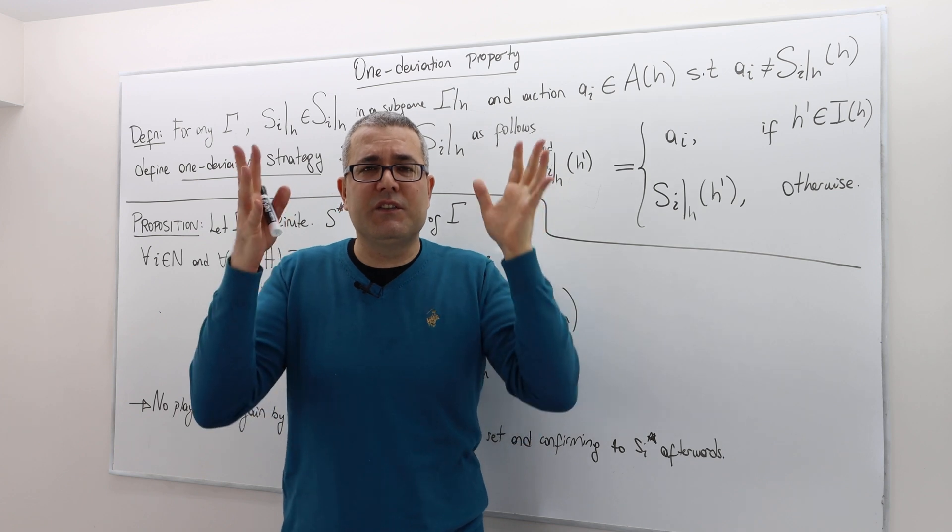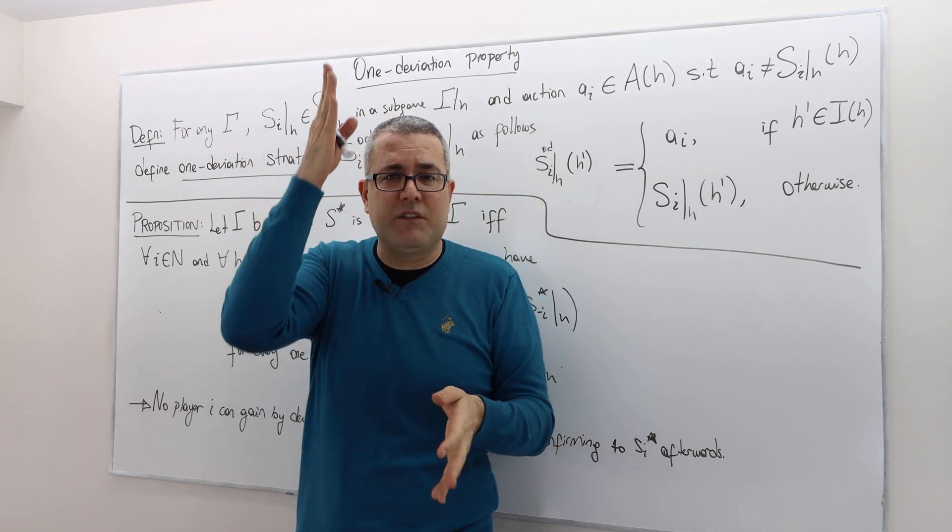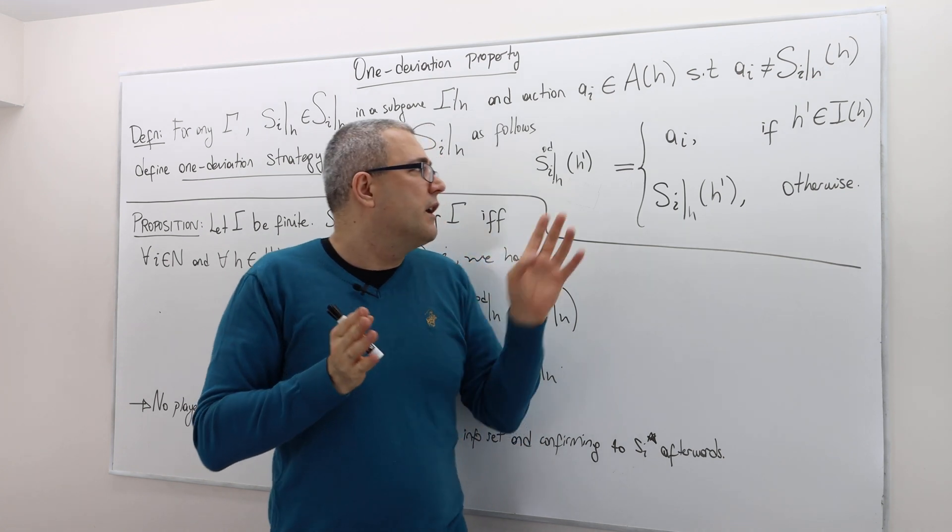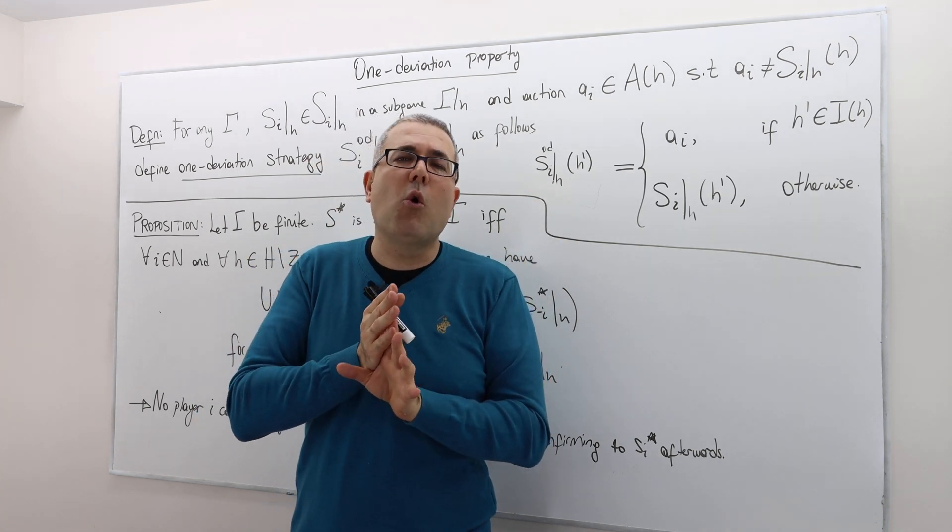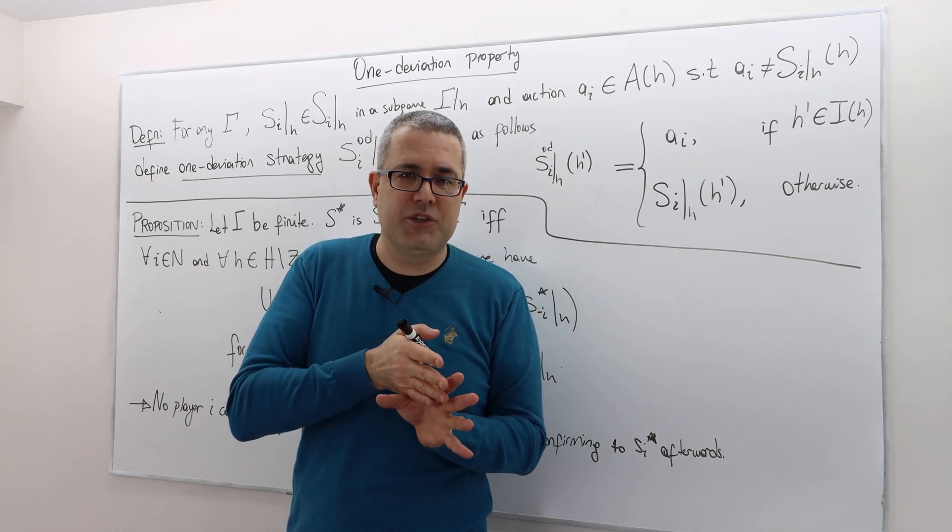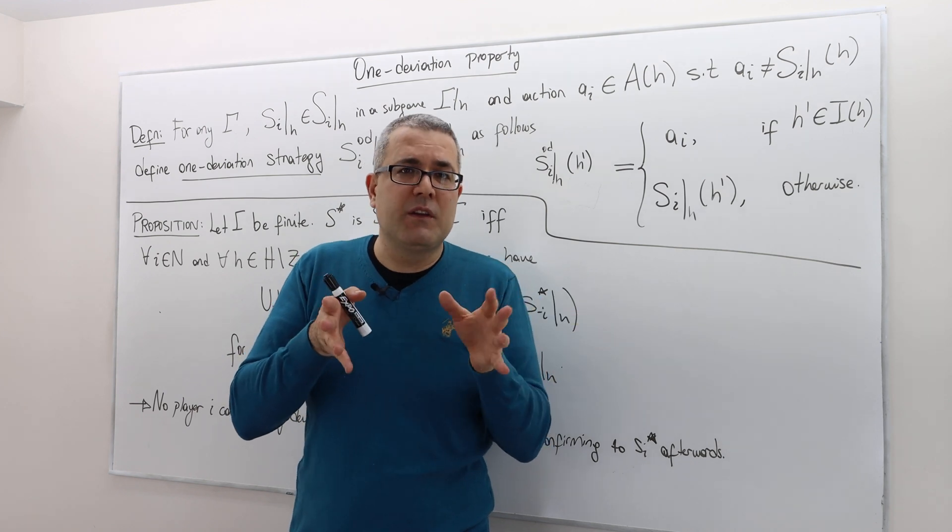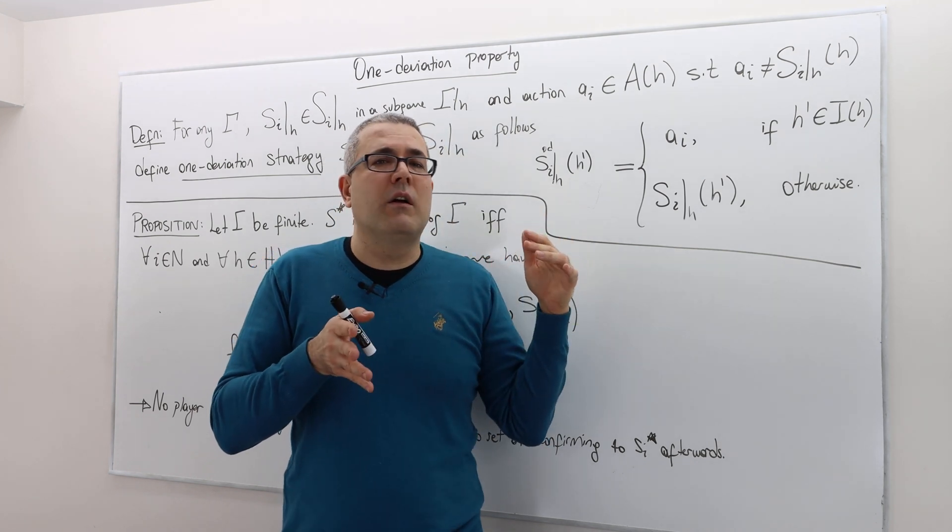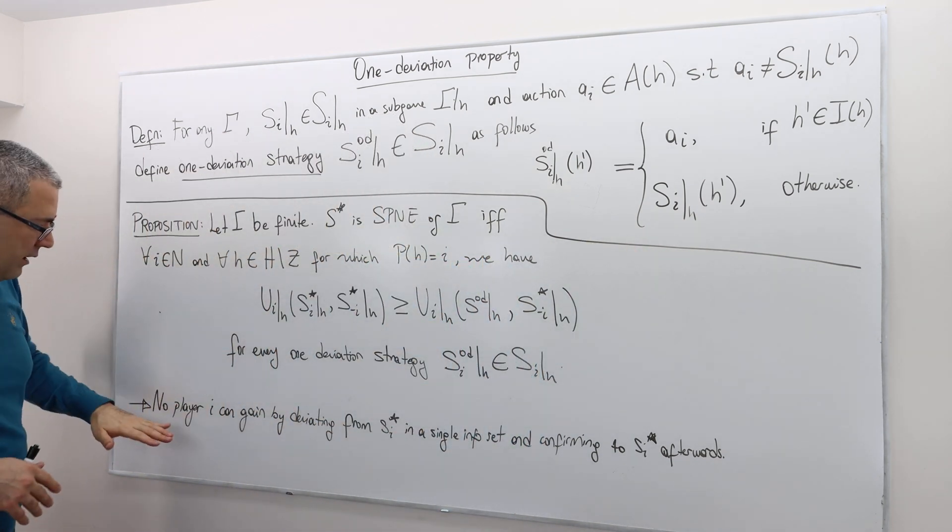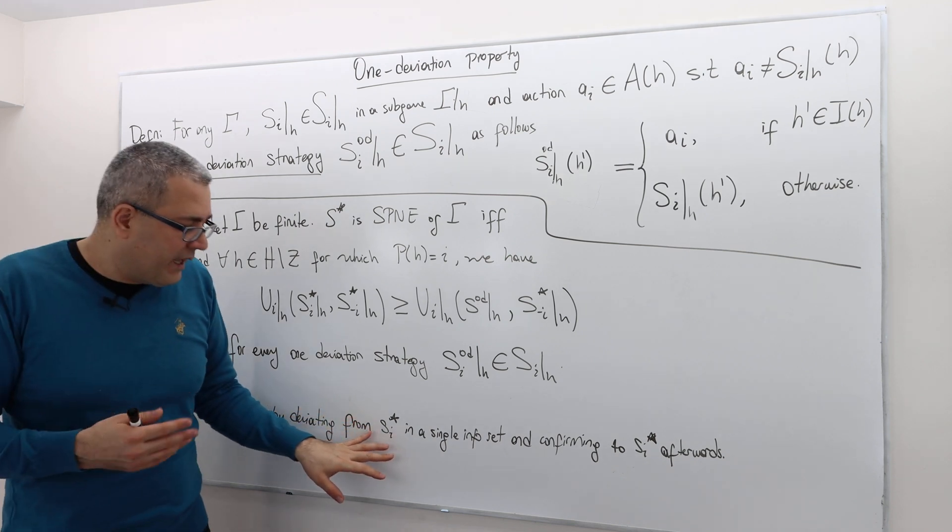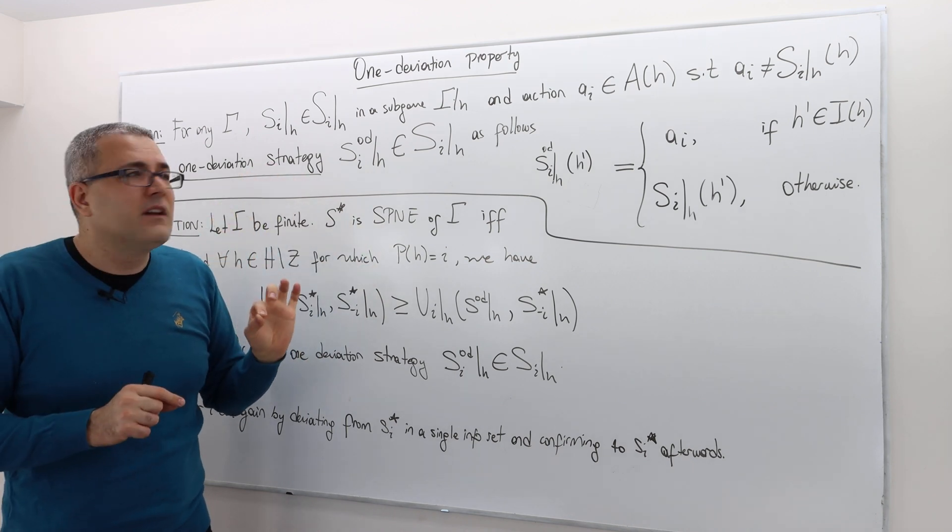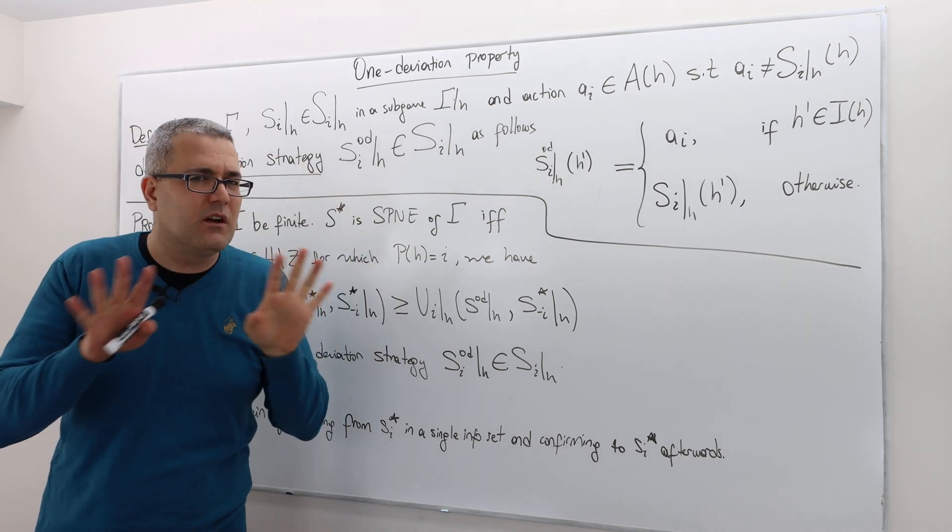Remember, SI slash H is a continuation strategy after history H. So fixing this H, what I'm going to do in this one deviation strategy, I will only change the action player I plays after history H. For every other histories, player I is going to behave exactly the same way. Put differently, player I is going to play exactly SI slash H except only after history H.